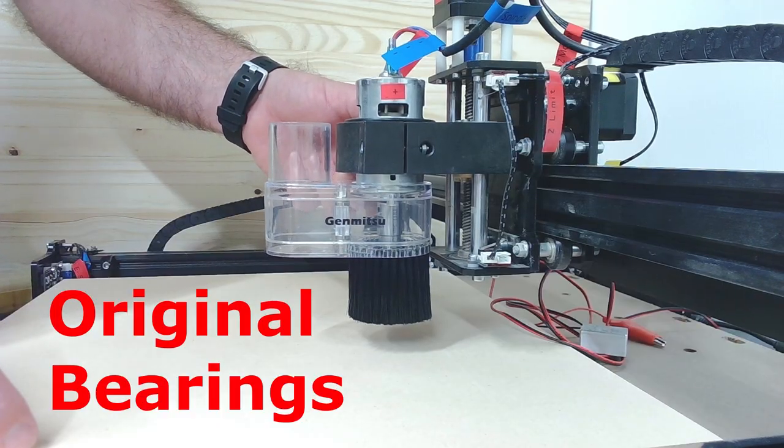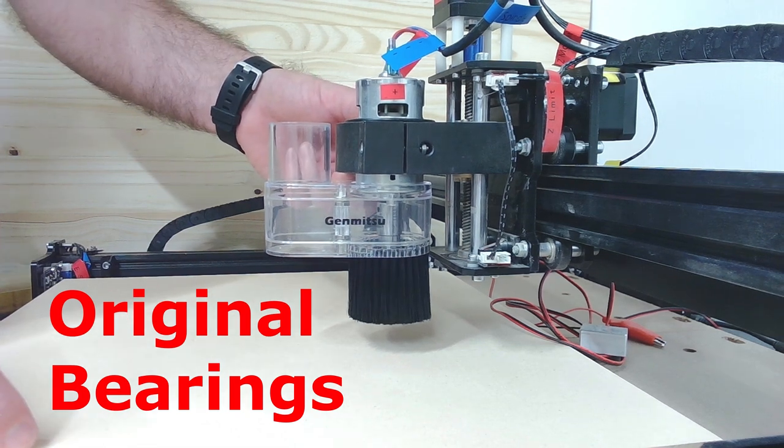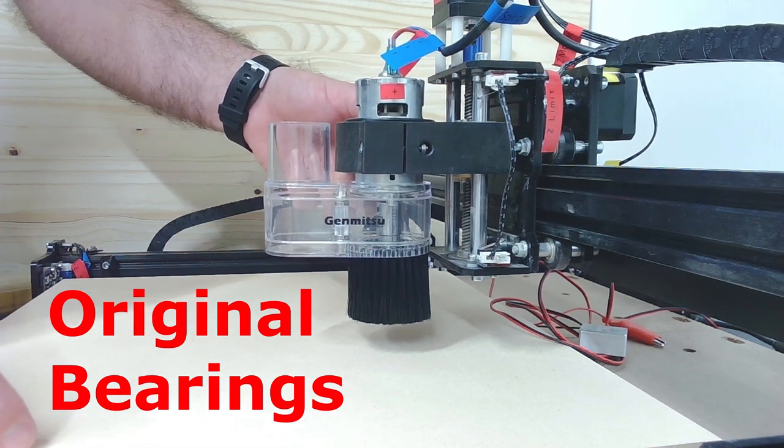Here you can see that the Z-axis has some play to it. It just kind of wiggles around. There's a lot of chatter on the cuts. This doesn't look as clean as it should.